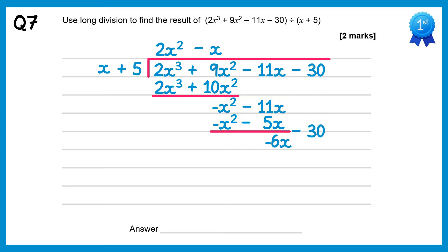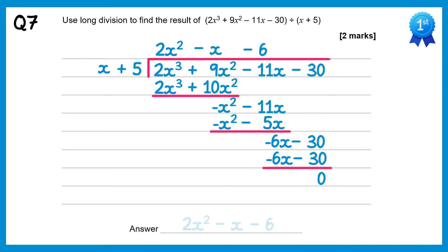Bring down the final term. Negative 6x divided by x is negative 6. Multiply negative 6 back through: negative 6 times x is negative 6x, negative 6 times positive 5 is negative 30. If you subtract these you get 0. So we have our final answer: 2x squared take x take 6.